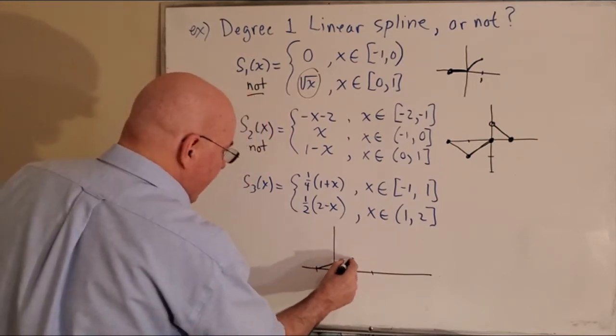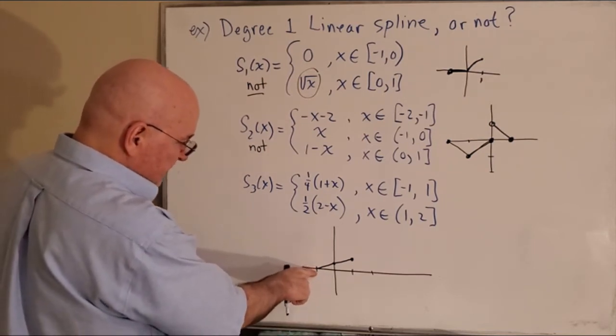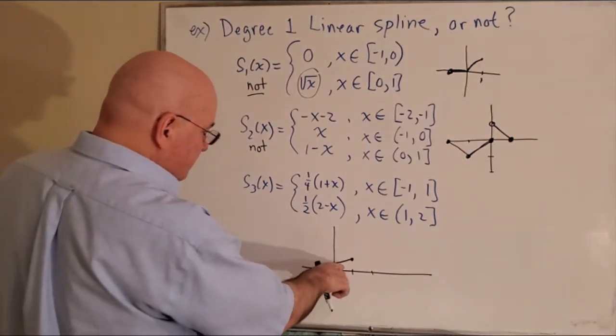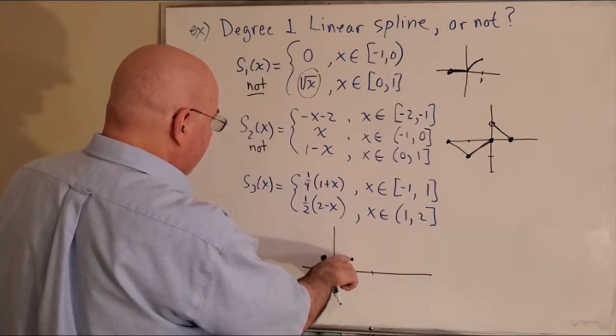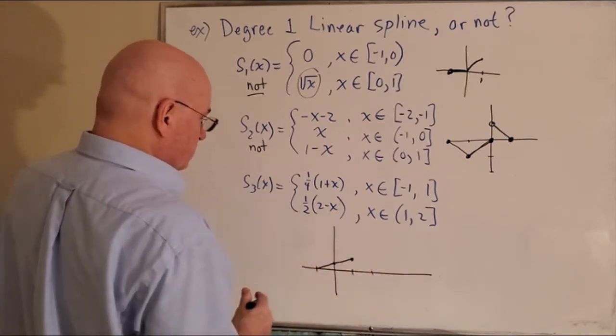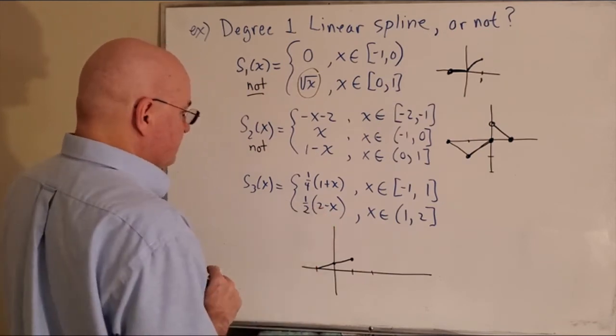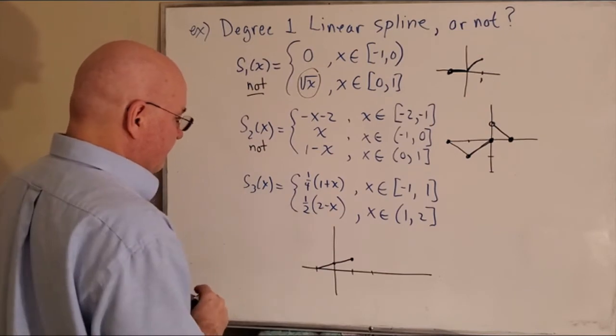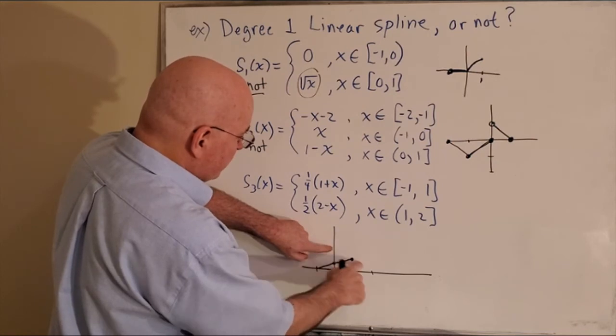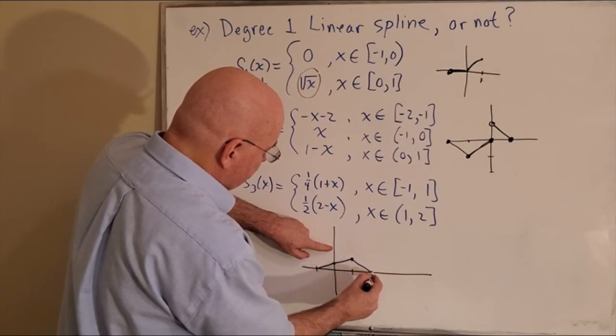And that would be a value of one-half. So we got a straight line segment. This is the point (-1, 0) - I know I'm not labeling the axes, you can do that in your homework - and this is the point (1, 1/2). And then between one and two you've got one-half times (2 - x), which is 1 - (1/2)x. So that would be a y-intercept of one if we were, but we're not starting it there. And that line would go right through there.